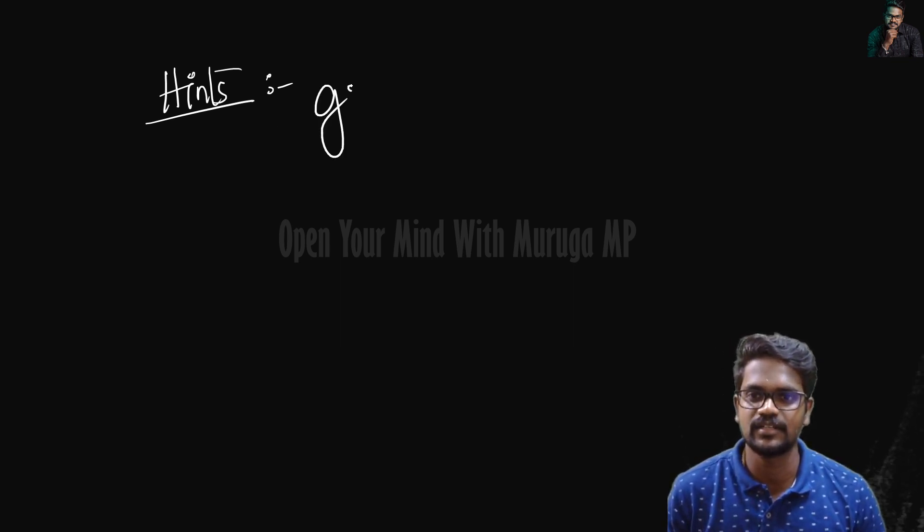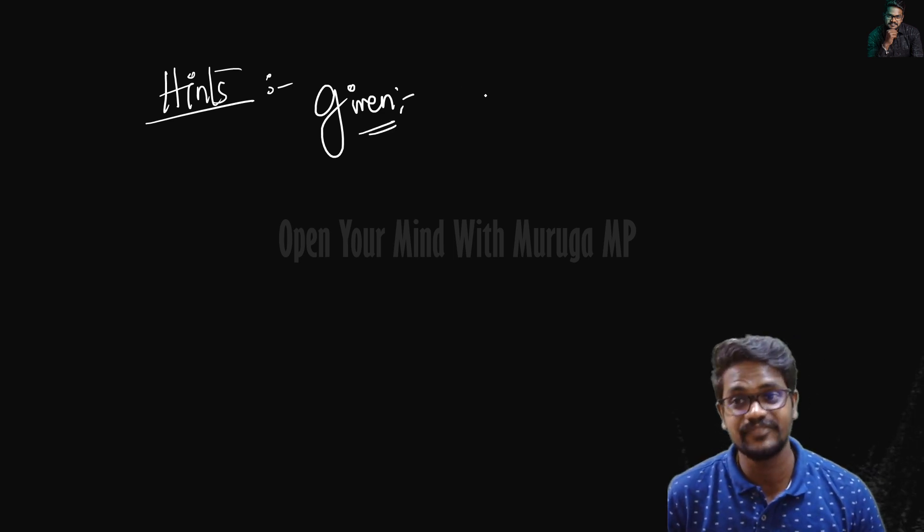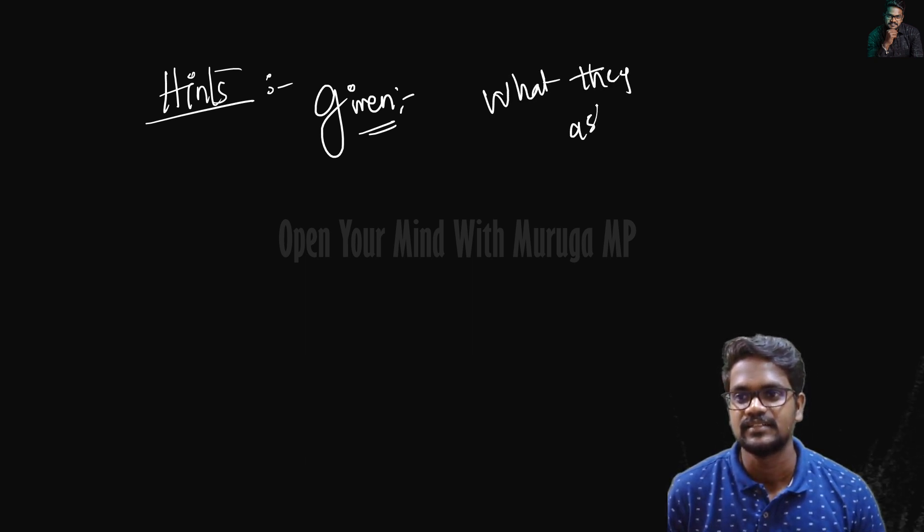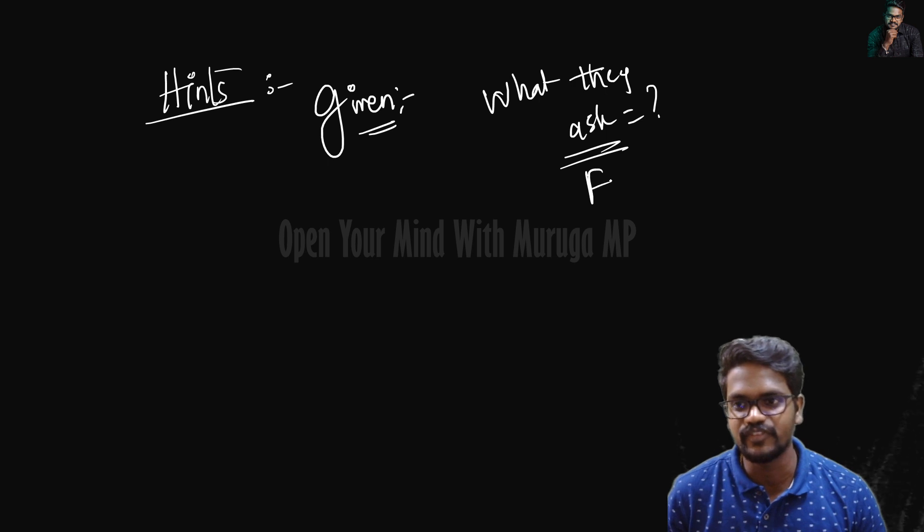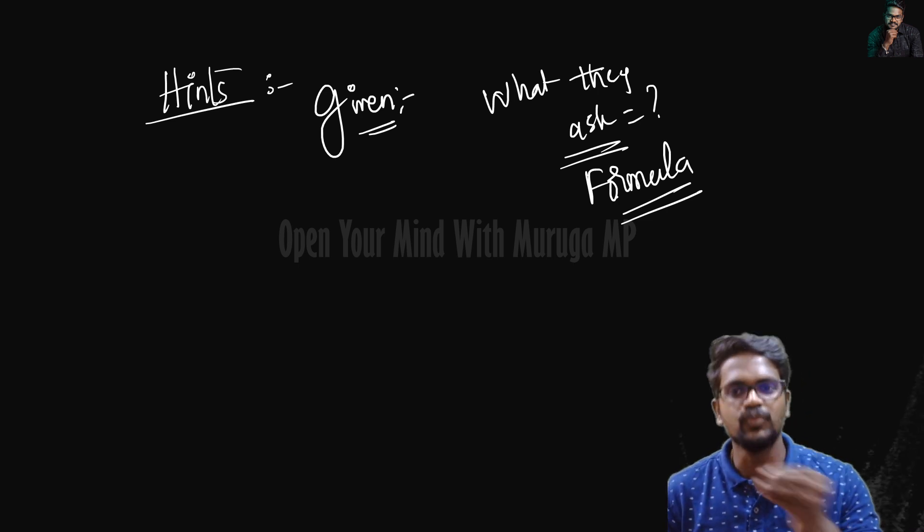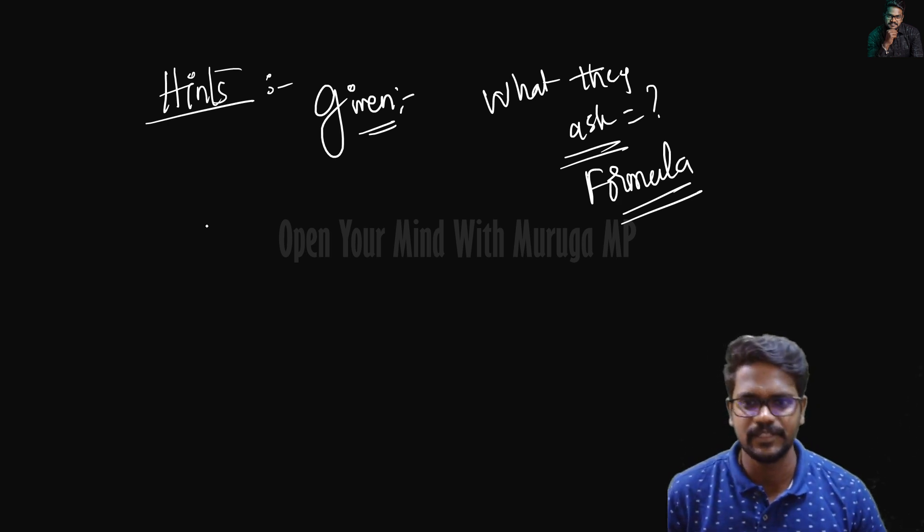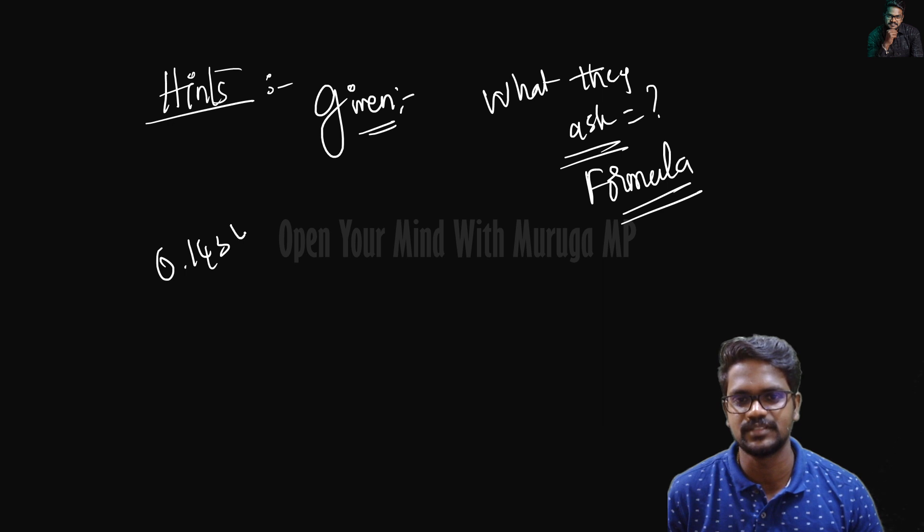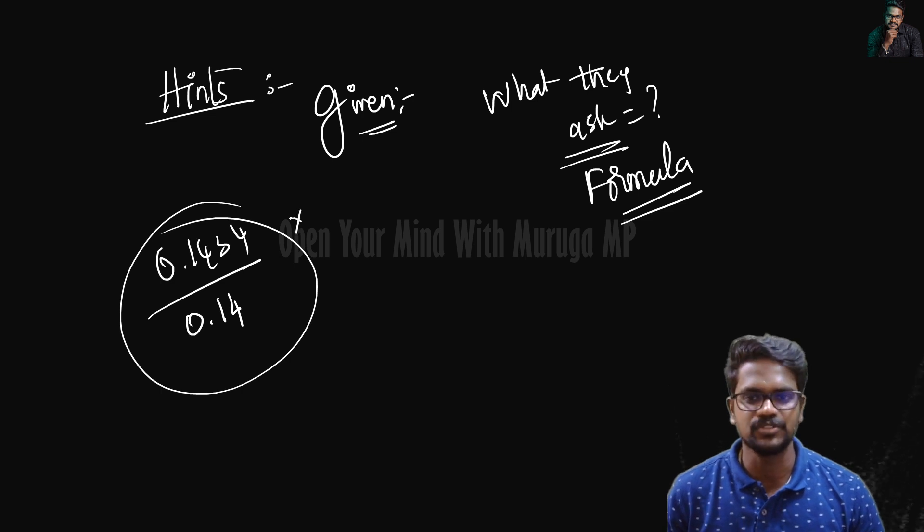For solving problems, first you can go with the given data. What values are given, what they asked - that's the first thing you will see. When there are decimal values, it's very simple. You just make that into a whole number. Right? Convert into whole numbers without decimals.